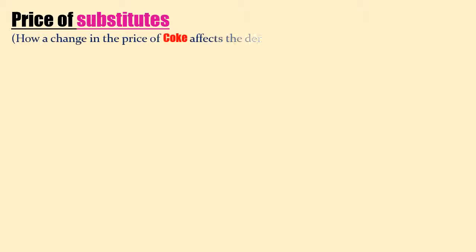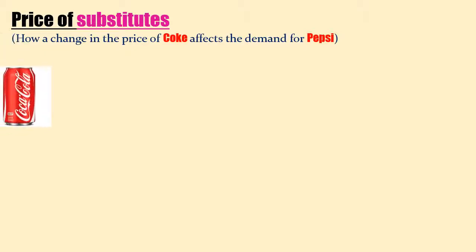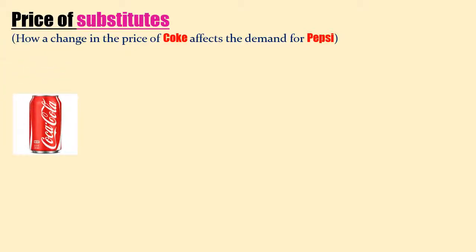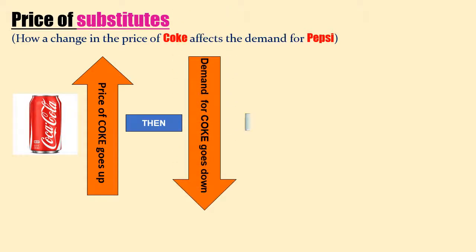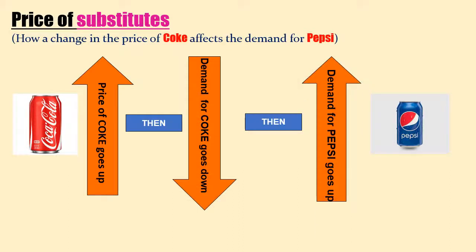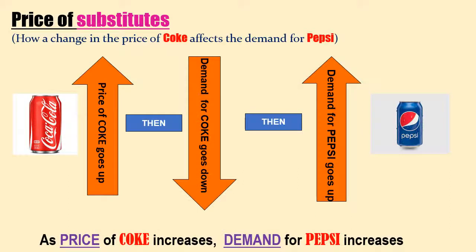Let us see how a change in the price of substitute goods affects demand. We will examine how a change in the price of Coke affects demand for Pepsi, assuming the price of Pepsi remains constant. When the price of Coke goes up, demand for Coke goes down. As a result, demand for Pepsi goes up. Therefore, as price of Coke increases, demand for Pepsi also increases.